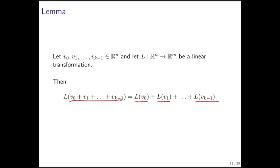If we go back to this statement right here, when k is equal to 1, we only have v0. All of these other ones go away. So all we need to show is that L of v0 is equal to L of v0. Ah, but that's easy.